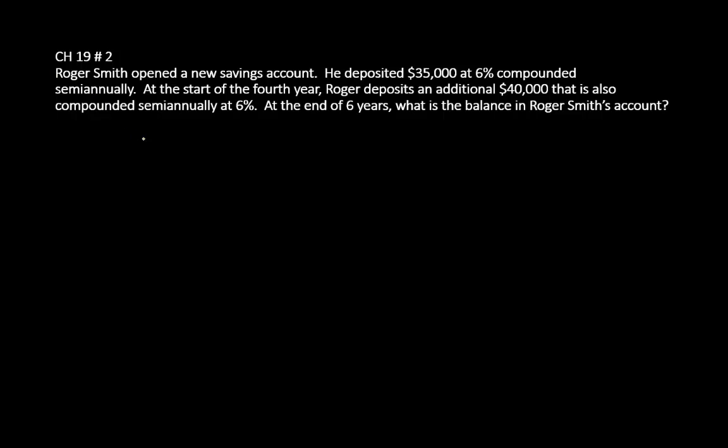Hello everyone. Today we're going to be working on a problem from Chapter 19. Roger Smith opened a new savings account. He deposited $35,000 at 6% compounded semi-annually. At the start of the fourth year, Roger deposited an additional $40,000 that is also compounded semi-annually at 6%. At the end of six years, what is the balance in Roger Smith's account?